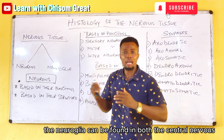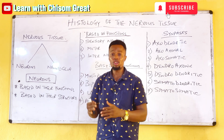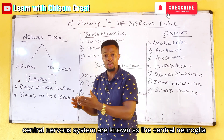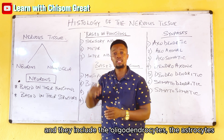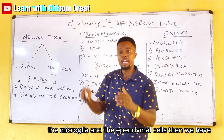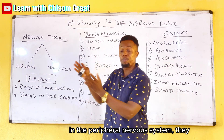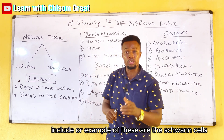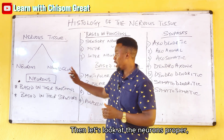The neuroglia can be found in both the central nervous system and the peripheral nervous system. The neuroglia found in the central nervous system are known as the central neuroglia, and they include the oligodendrocytes, the astrocytes, the microglia, and the ependymal cells. The neuroglia found in the peripheral nervous system include the Schwann cells and the satellite cells.